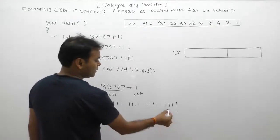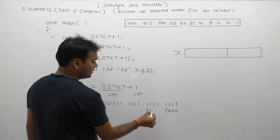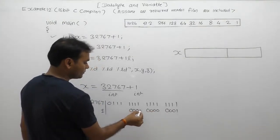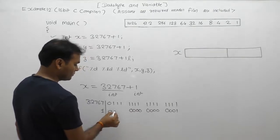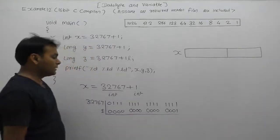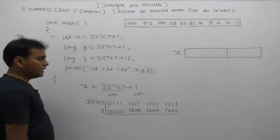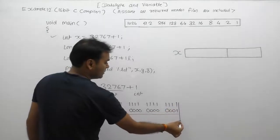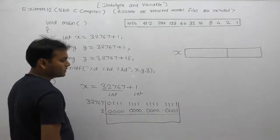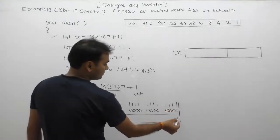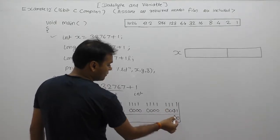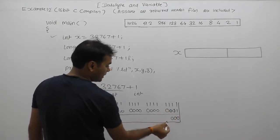Now what is the result of this addition? The addition is being performed with 16 bits combined with 16 bits, so the result will also come in the form of 16 bits. 1 plus 1 is 0, carry 1; 1 plus 1 is 0, carry 1; 1 plus 1 is 0, carry 1 — this pattern repeats.